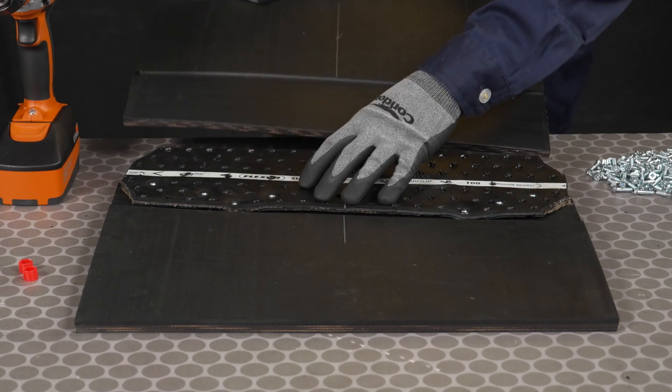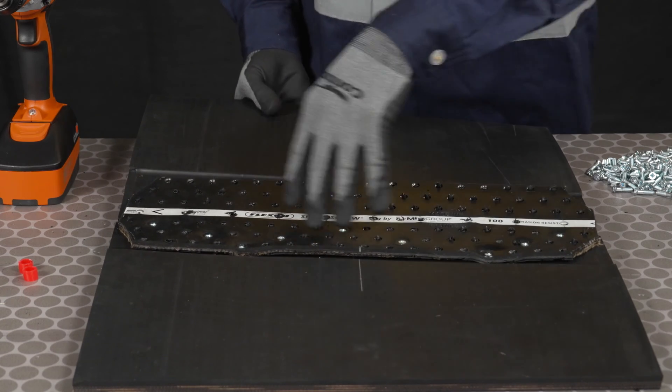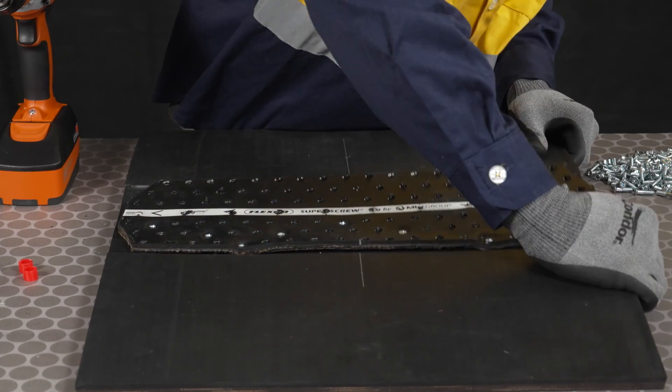Center and insert the opposite belt end with the longer skive reachback into the splice, so the two ends of the belt are in firm contact with each other. Make sure not to leave a gap between the belt ends.